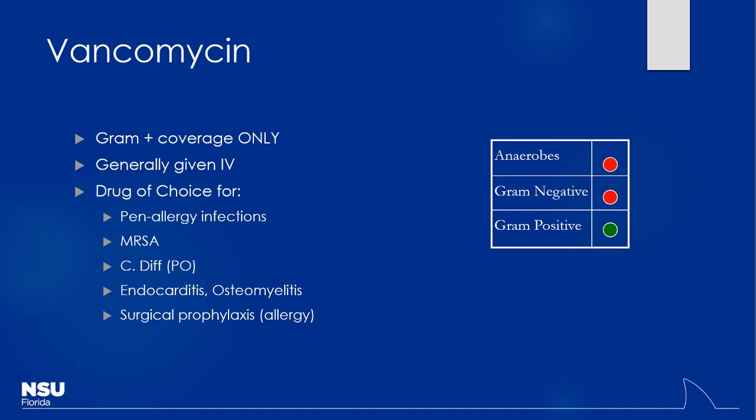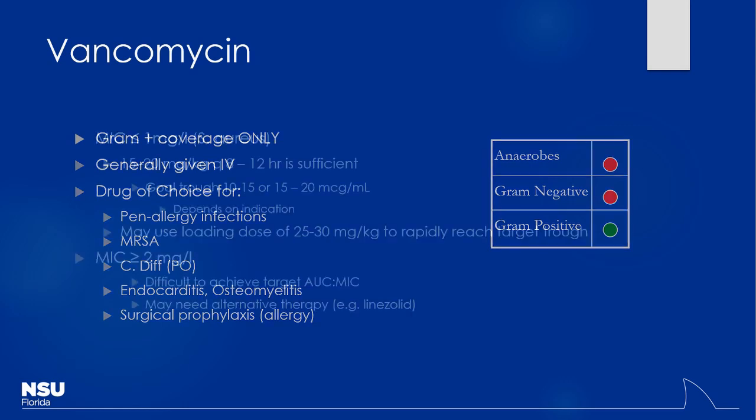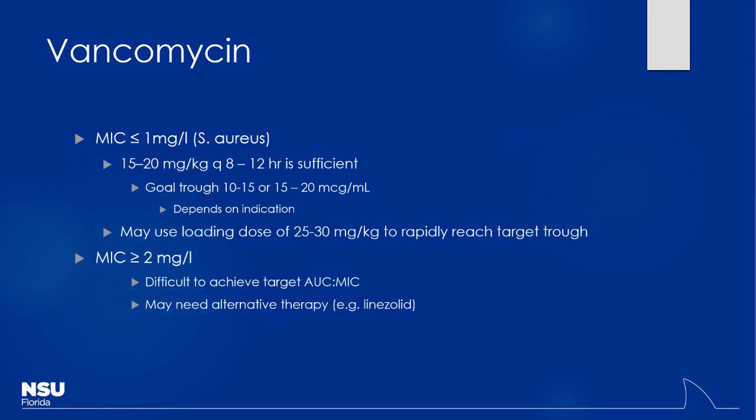Other places where vancomycin is commonly used include anywhere you're worried about gram-positive infections — endocarditis, osteomyelitis. It's good to know the coverage for these antibiotics. You don't have to memorize every specific trough level, but based on the MIC of the bacteria, you may need to shoot for different drug levels.